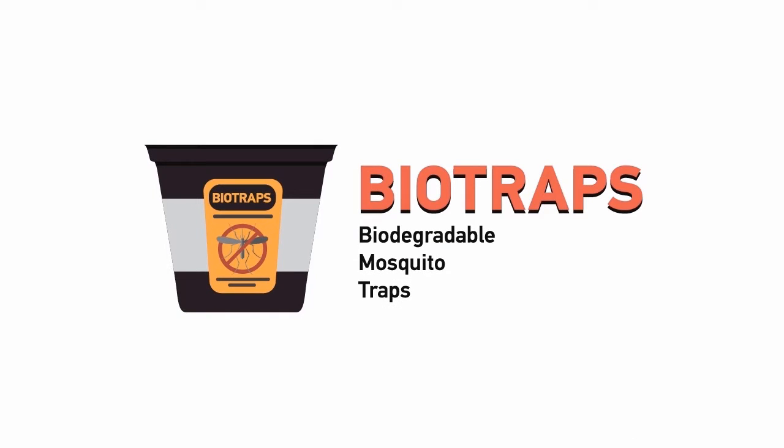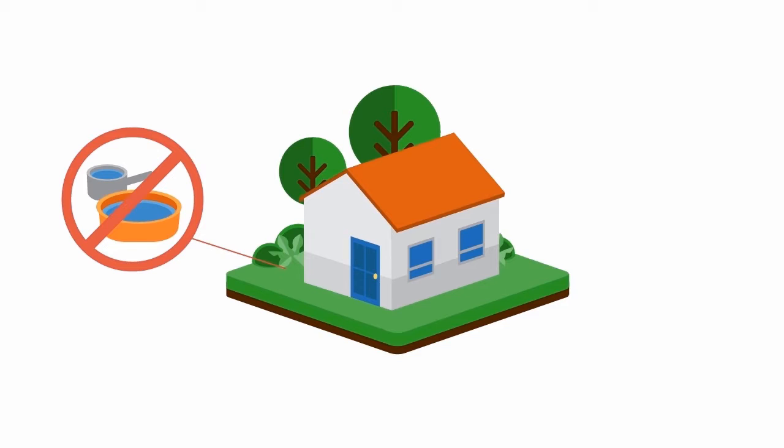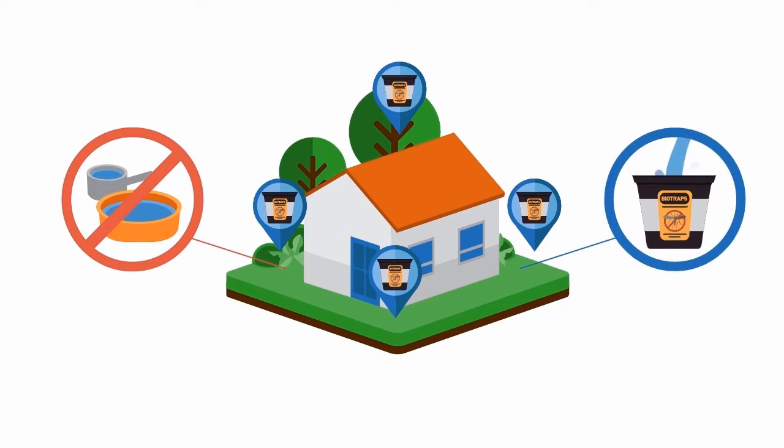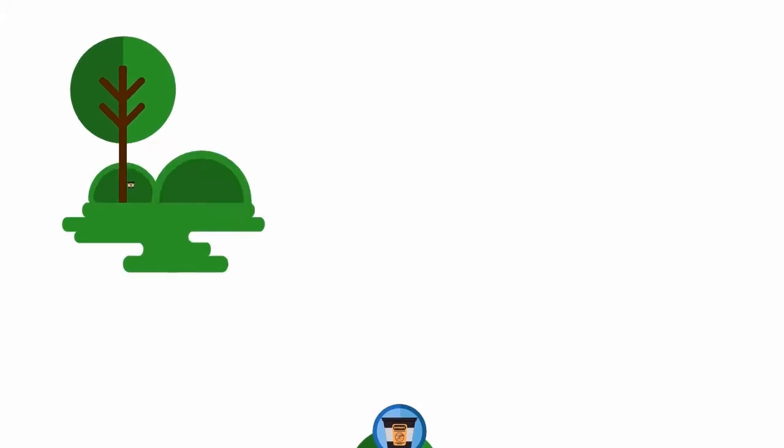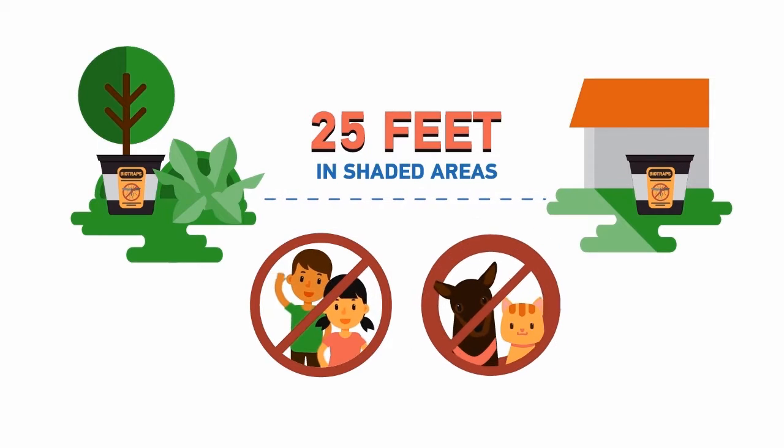Biodegradable mosquito traps, or biotraps. Just remove standing water, place the biotraps around your home, add water to the overflow hole, and that's it. Place around your property every 25 feet in shaded areas, out of the reach of animals and children.